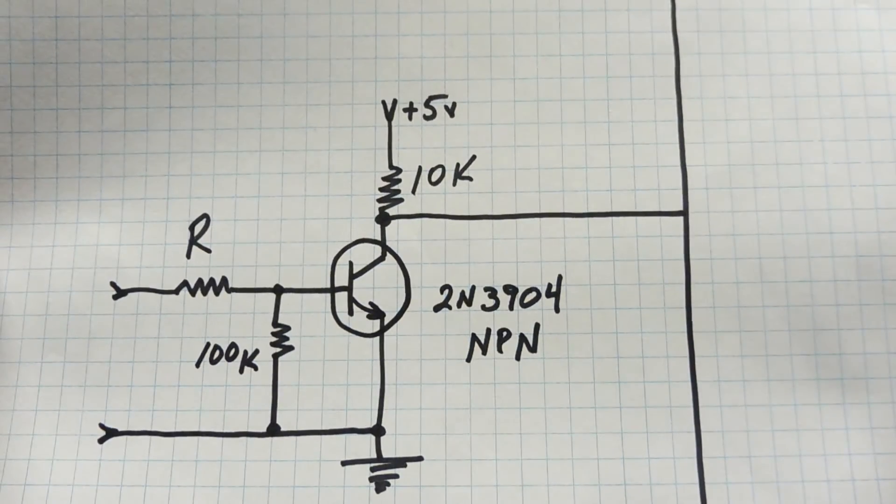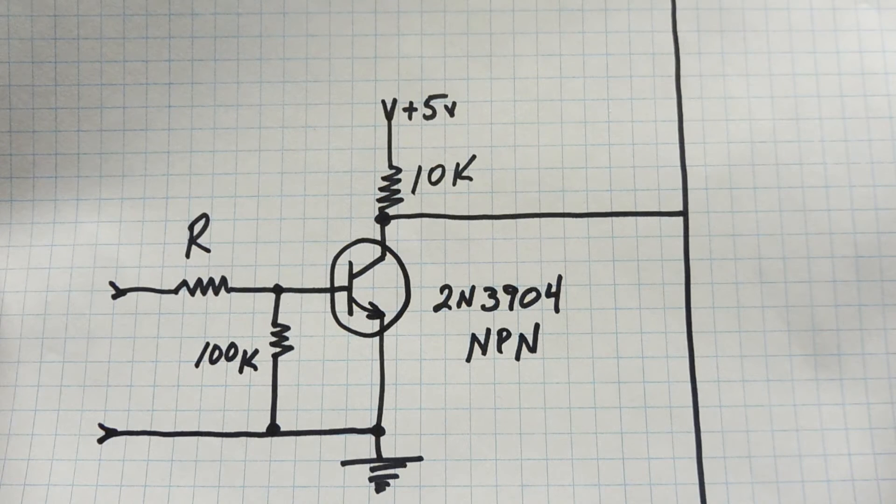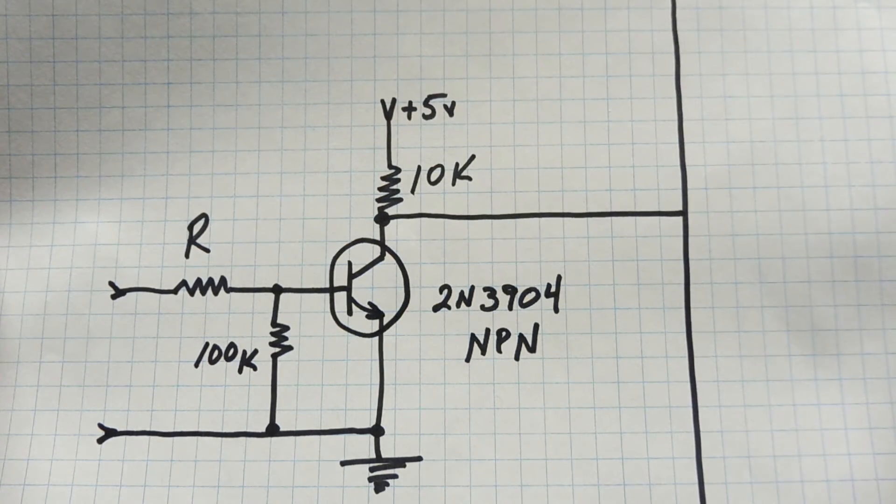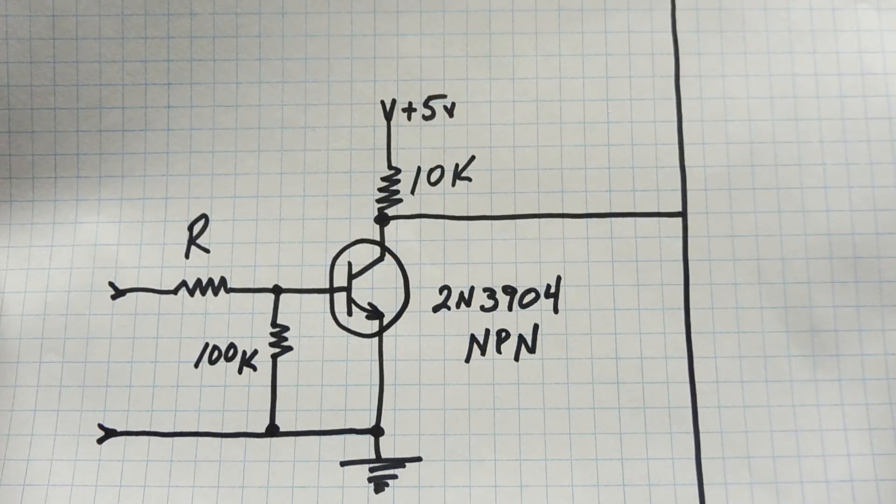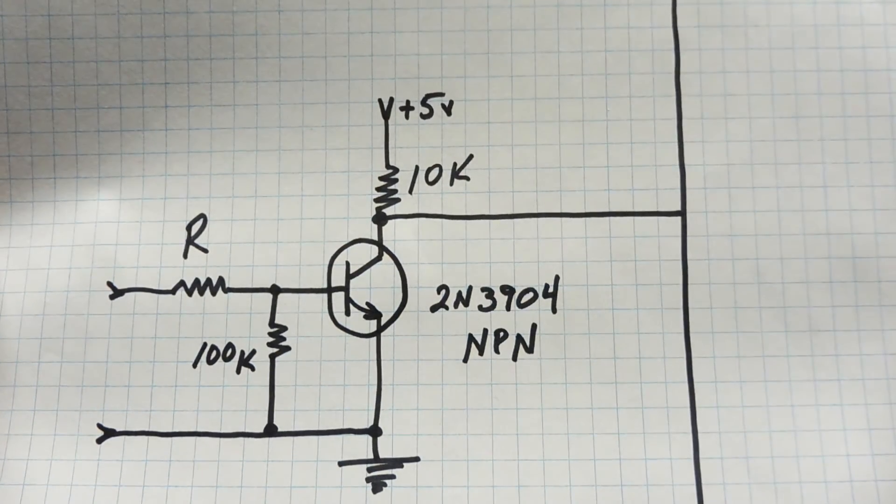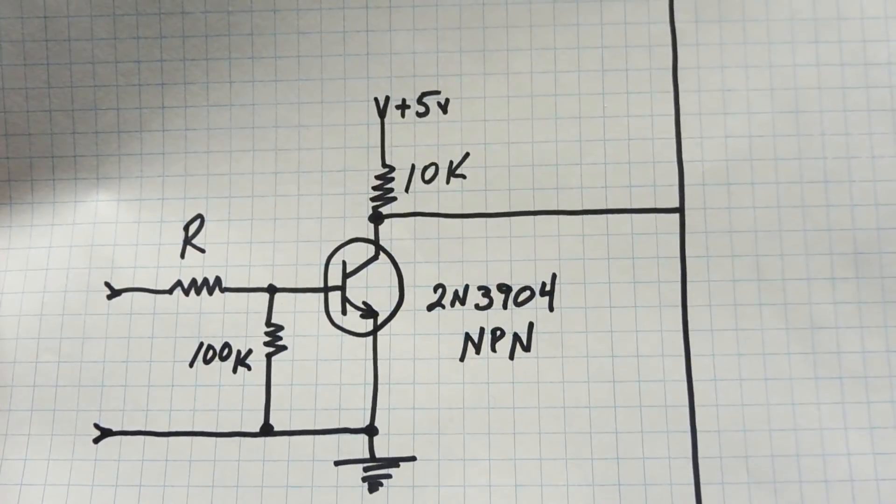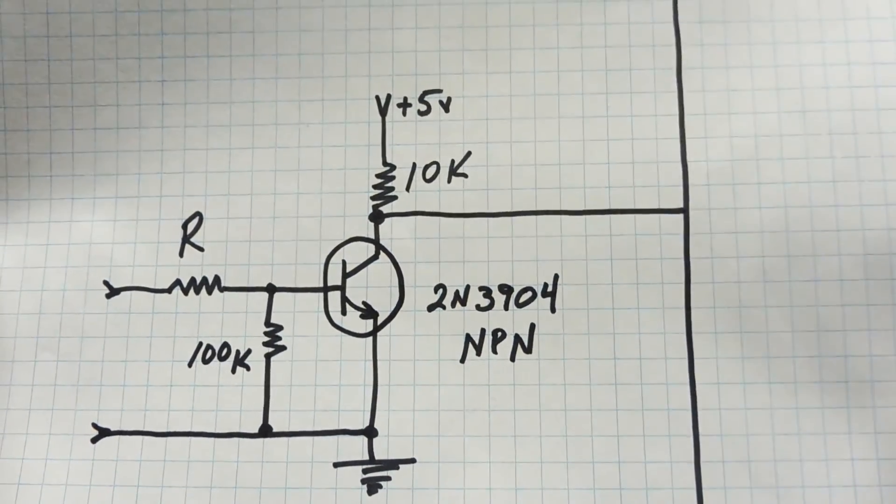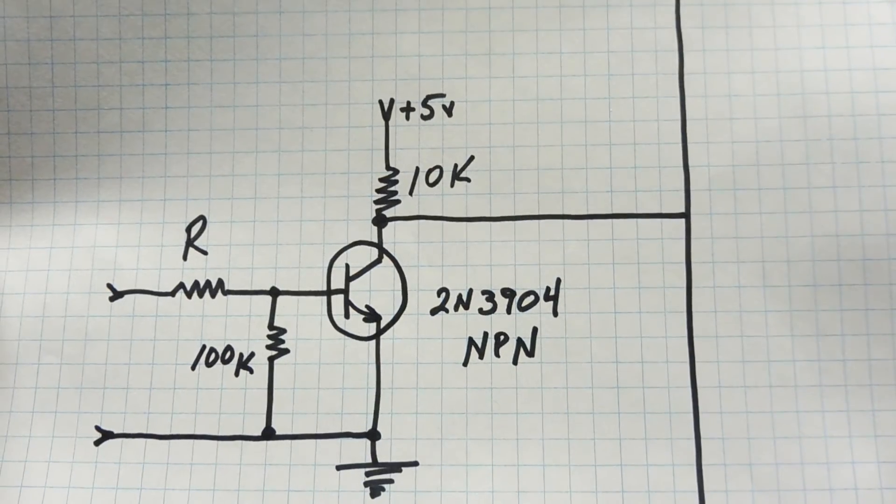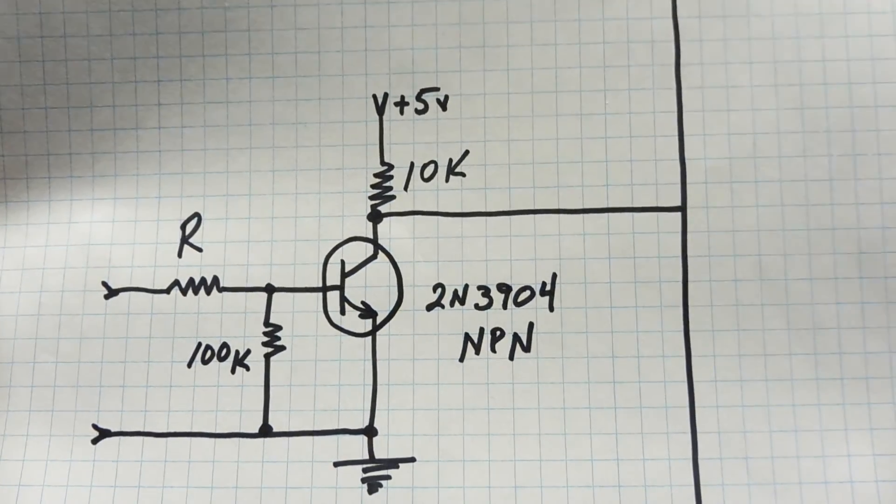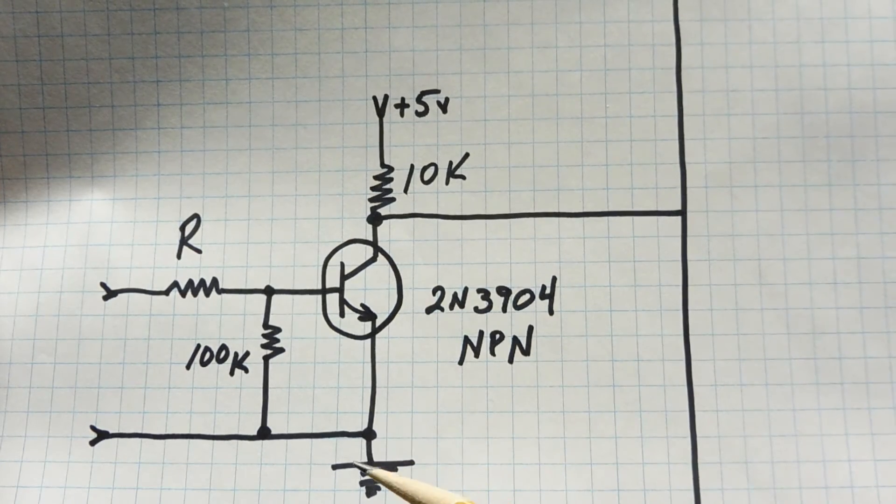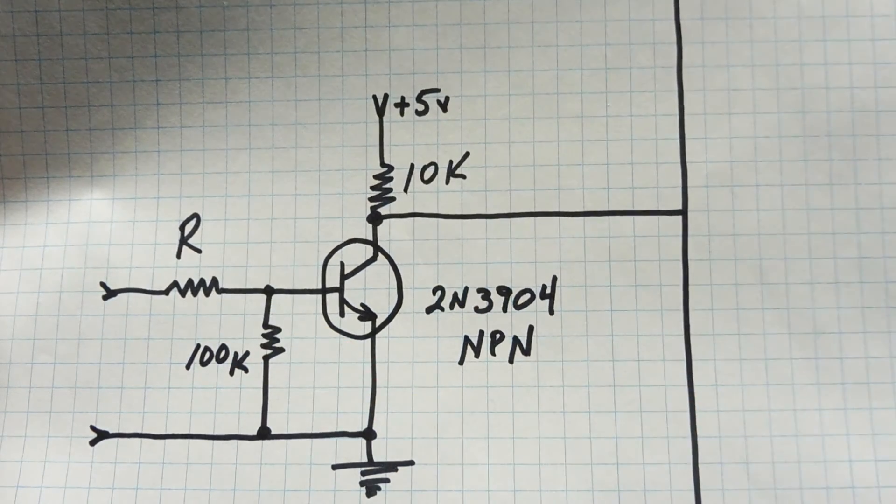This is probably the cheapest way to interface a device to your microcontroller. Using an NPN transistor, a 2N3904. To calculate the value for R, just get yourself a variable power supply and hook it up to the input. Adjust the power supply to your desired threshold voltage. Then vary the value for R until the collector saturates, until the voltage from the collector to ground is around 0.3 volts. That will give you a good indication for the value for R.